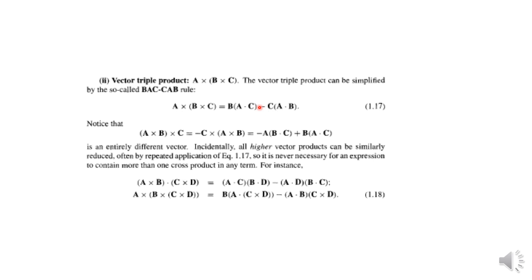Note that the cross product is not commutative — A × B = −(B × A) — but this vector triple product, when the brackets are changed, results in an entirely different result. Changing the bracket order is not merely a negative sign; it gives a fundamentally different expression.